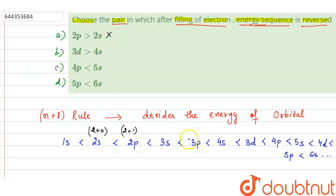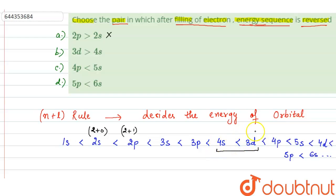For option B, 3D energy is greater than 4S. This is true — that is why electrons are first filled in 4S, then 3D. But when there is ionization, electrons are lost from 4S, because after filling of electrons, the energy order is reversed.